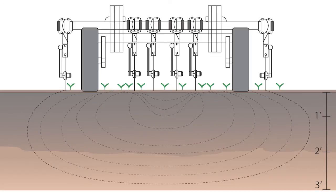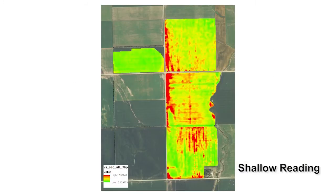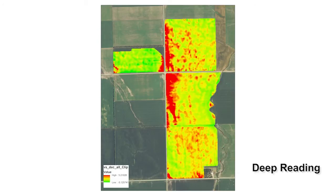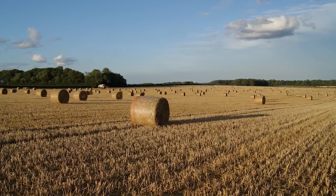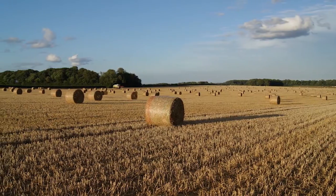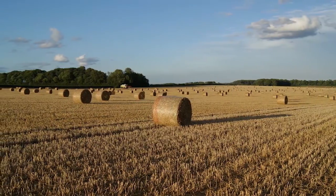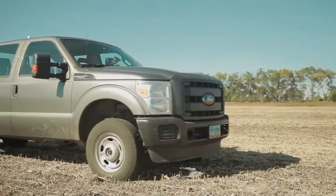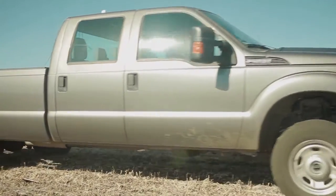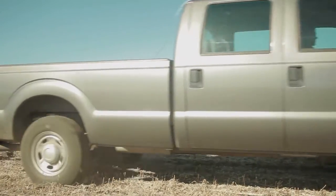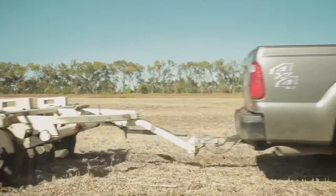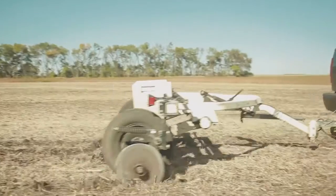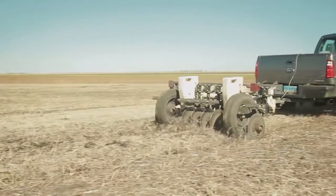The concept is the same with the Veris. With the Veris, you will get a shallow reading — the 0 to 1 foot depth — and a deep reading, which is 0 to 3 feet. This will give you a better idea of which management approach to select. As the cart is pulled behind a pickup across the field, you're collecting readings connected to a location using a GPS system, which is what creates the map.